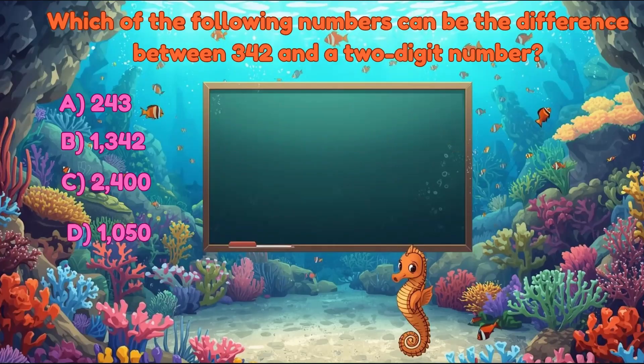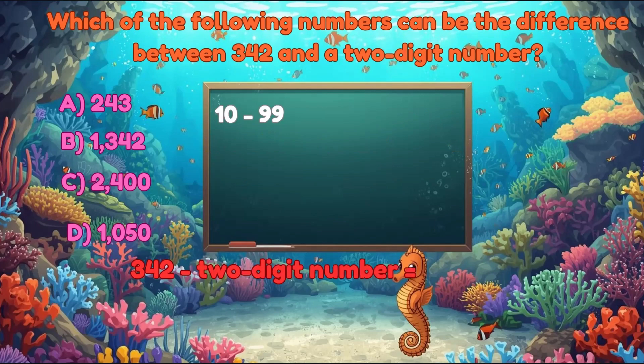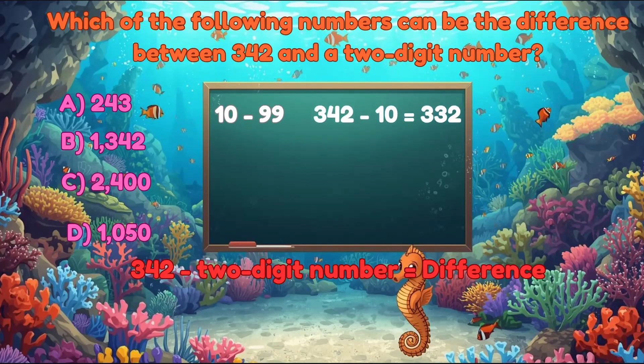Two-digit numbers go from 10 to 99. The difference can be found by subtracting a two-digit number from 342, where the difference is one of the options. We need 342 minus a two-digit number. The maximum difference happens when we subtract the smallest two-digit number. 342 minus 10 equals 332. So any difference must be 332 or less.